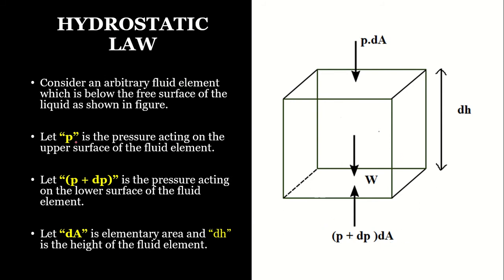p is the pressure acting on the upper surface of the fluid element, and p + dp is the pressure acting on the lower surface. Already a pressure of p is acting on the top surface, and as we move downwards the pressure increases. We don't know exactly how much the pressure increases, so let that increase be dp. Therefore the total pressure on the lower surface is p + dp, acting in the opposite direction to the upper pressure force. dA is the area and dh is the height of the fluid element.